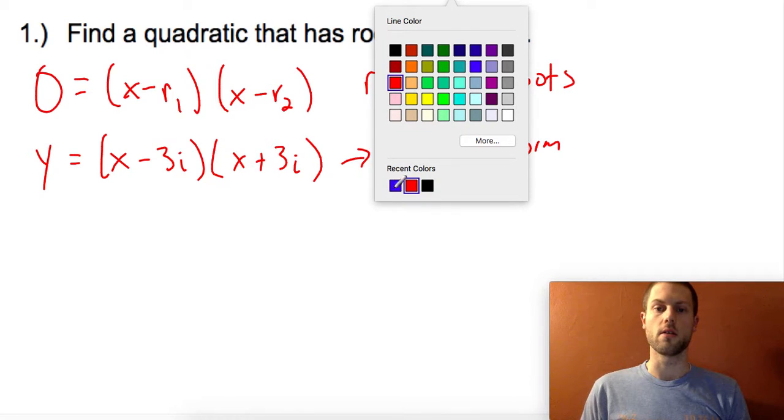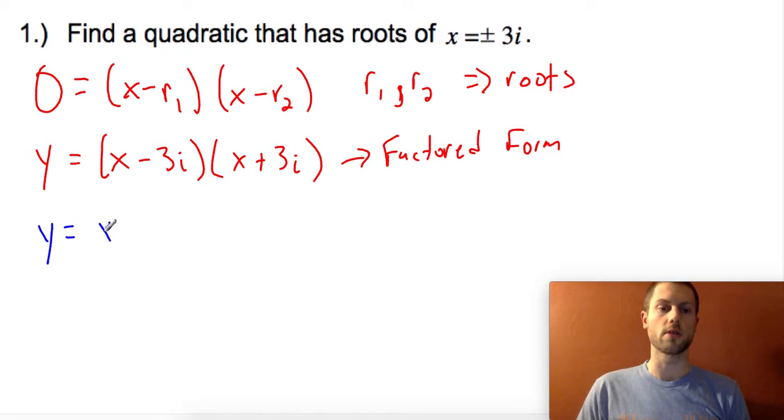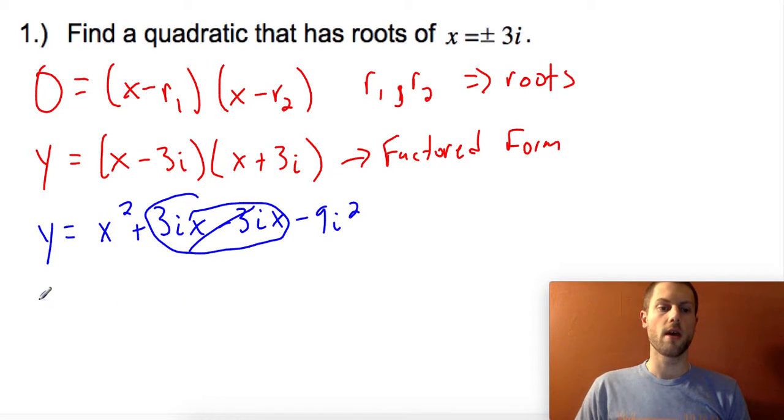If I multiply both binomials together, I get y = x² + 3ix - 3ix - 9i². Conveniently, the middle terms cancel out to zero, leaving y = x² - 9i².